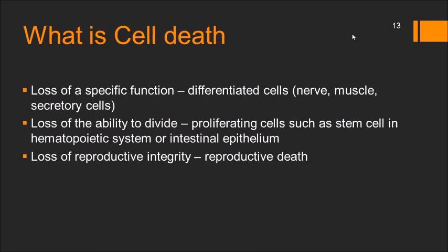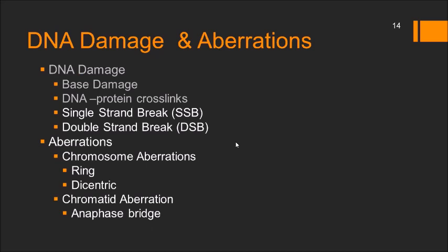Now we need to know what is cell death. Cell death is loss of a specific function in differentiated cells such as nerve, muscle or secretory cells; loss of the ability to divide in proliferating cells such as stem cells in the hematopoietic system or intestinal epithelium; or loss of reproductive integrity — otherwise called reproductive death. DNA damage, when it misrepairs, leads to aberrations classified as base damage, DNA-protein crosslink damage, single strand break, or double strand break. Chromosome aberrations can result in ring or dicentric formations, or chromatid aberrations referred to as the anaphase bridge.